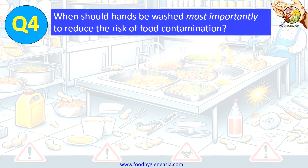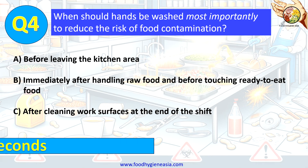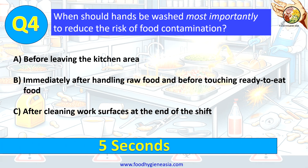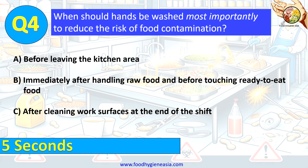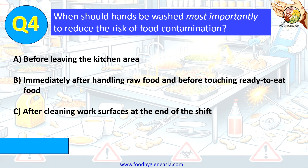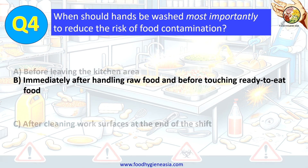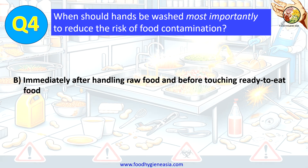Question 4. When should hands be washed most importantly to reduce the risk of food contamination? A. Before leaving the kitchen area. B. Immediately after handling raw food and before touching ready-to-eat food. C. After cleaning work surfaces at the end of the shift. The correct answer is B. Immediately after handling raw food and before touching ready-to-eat food.